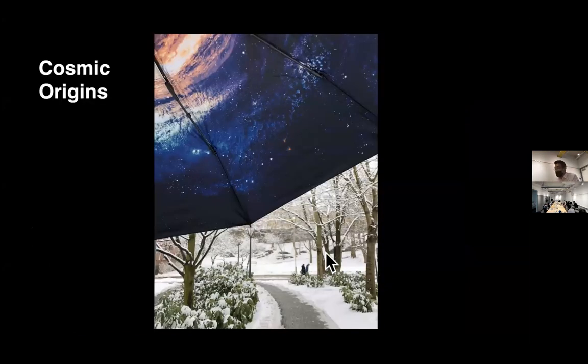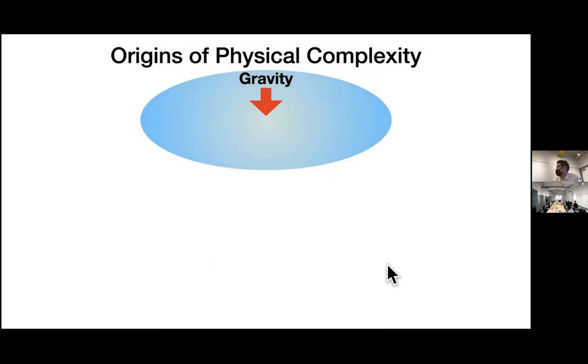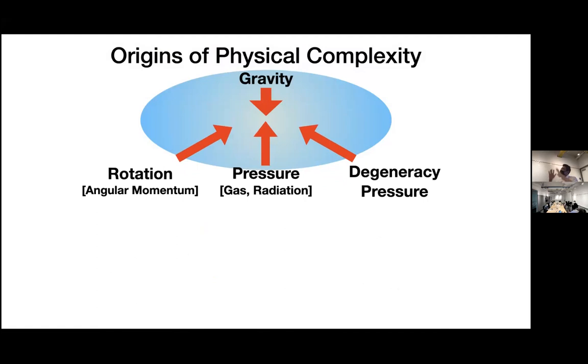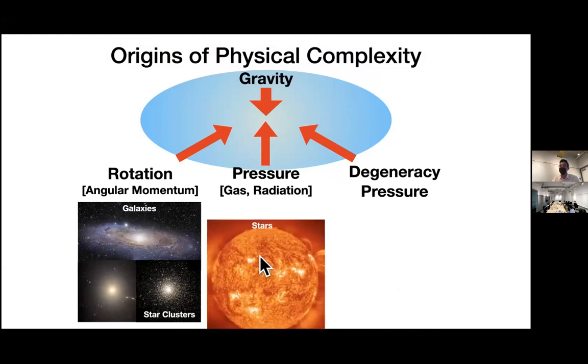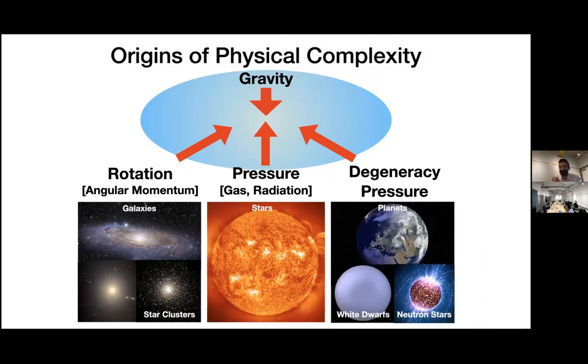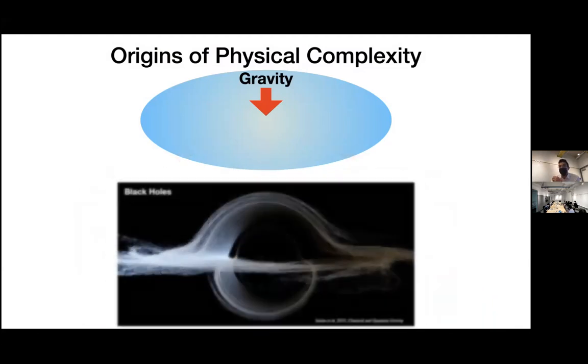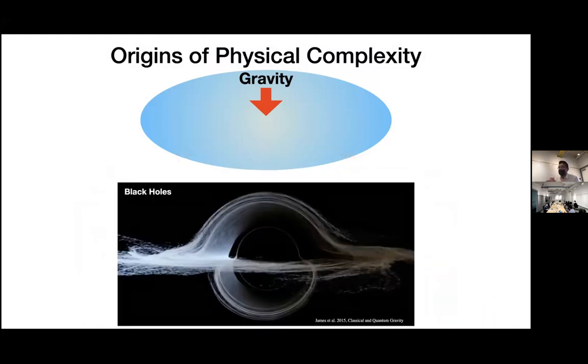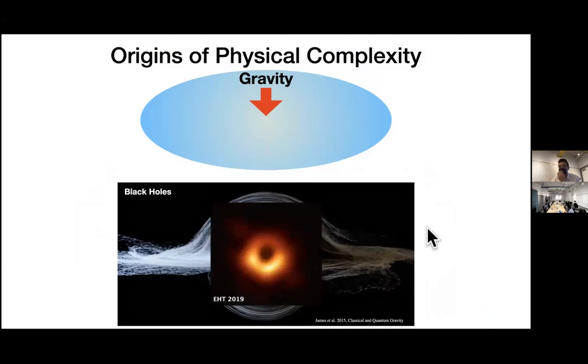As I'm wandering down the snowy streets of Sweden, I have to remind myself what's up there. We're actually part of the galaxy and complex structure has emerged from the universe, including life. The origins of physical complexity are driven by gravity, but then for many systems approaching quasi-equilibrium, that gravitational collapse can be resisted by either rotation, angular momentum for galaxies and star clusters, or some kind of pressure - gas or radiation pressure in stars, or degeneracy pressure in white dwarfs, neutron stars and planets. If gravity is too strong, we have the formation of black holes now imaged.